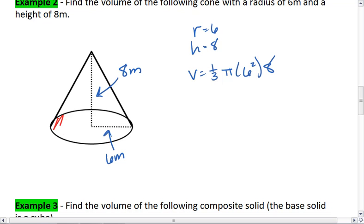This tells me that my base, which is my pi r squared, is 36 pi. We take 36 times pi, we get 113.097.